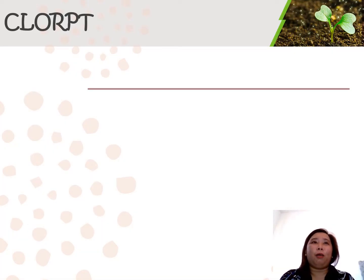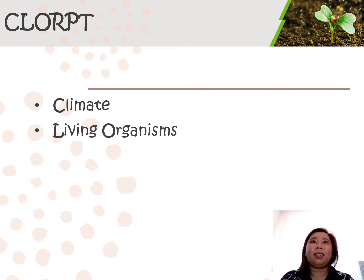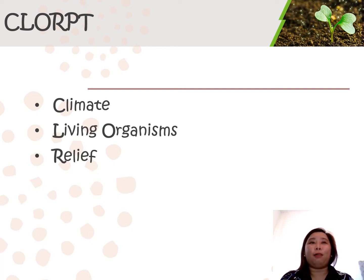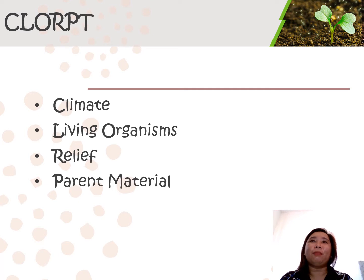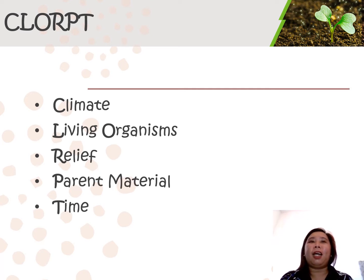CLORPT stands for C as climate, LO for living organisms, R for relief or topography, P for parent material, and T for time.